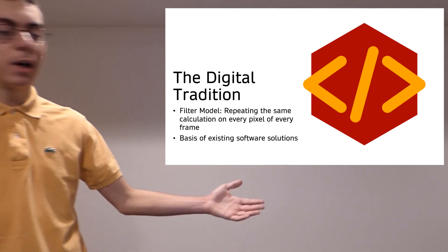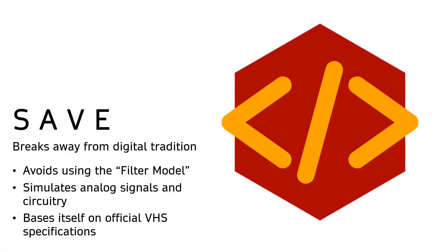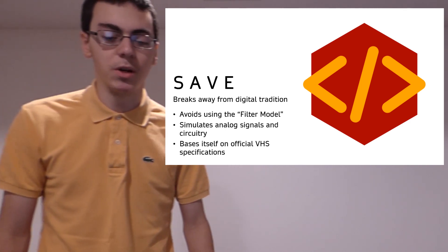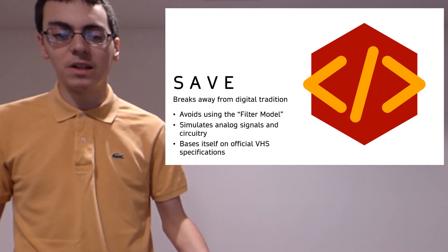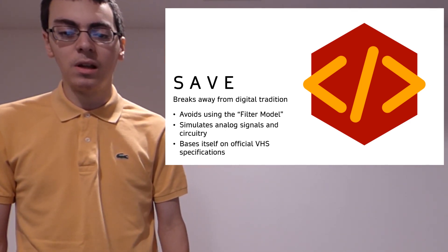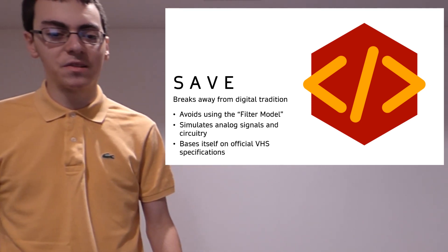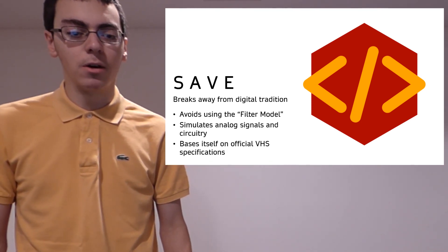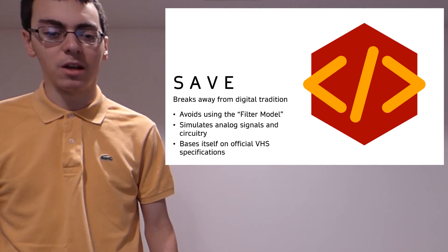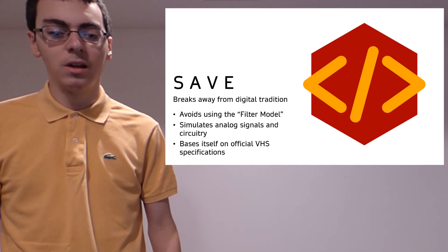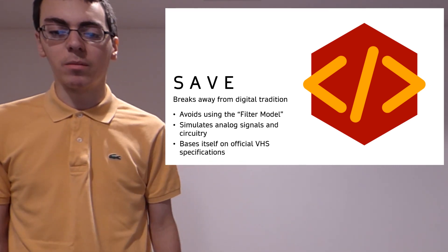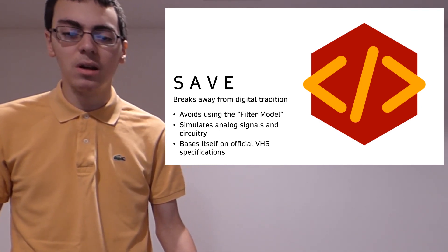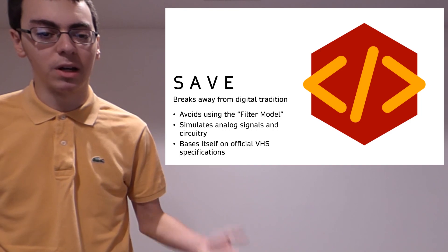This brings us to the final word: emulation. Essentially, SAVE acts like a VCR living inside of your computer, treating incoming data as a continuous electrical signal. This virtual flow of electricity is then manipulated based on the mathematics of real analog circuitry, according to official VHS specifications. This approach is what separates SAVE from existing solutions, leading to results that are not only aesthetically pleasing, but also accurate, repeatable, and adjustable.